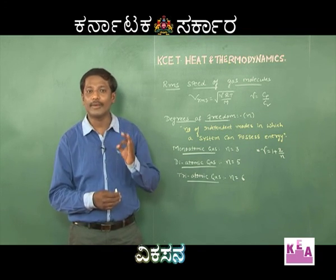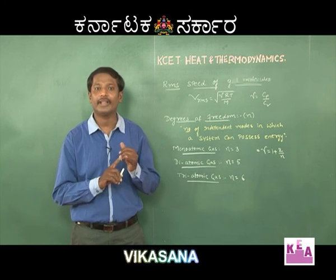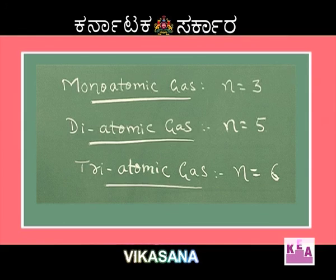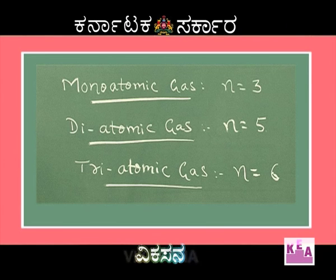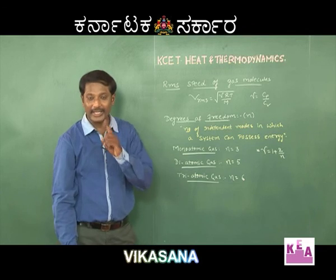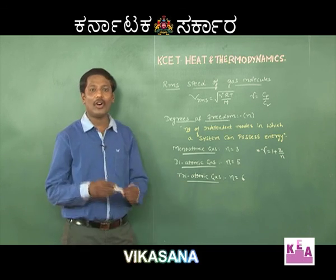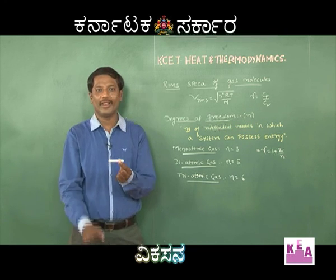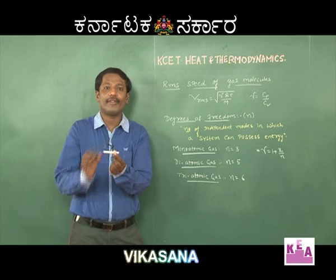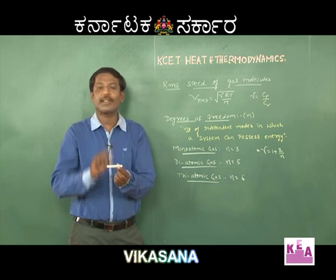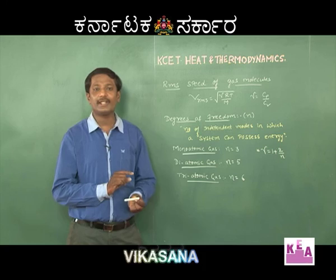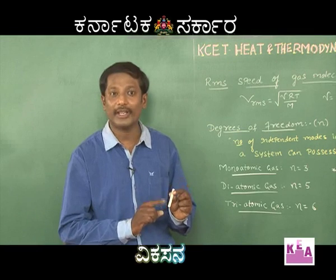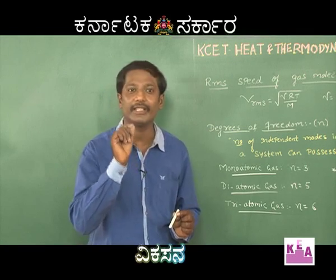Students, please remember: the degrees of freedom for monoatomic gas is three. For diatomic gas the degrees of freedom is five, and for triatomic gas N equals six — but there is a condition. In the case of triatomic gas, all three molecules should be in non-linear form. If the three molecules are in linear form then the degrees of freedom is seven.